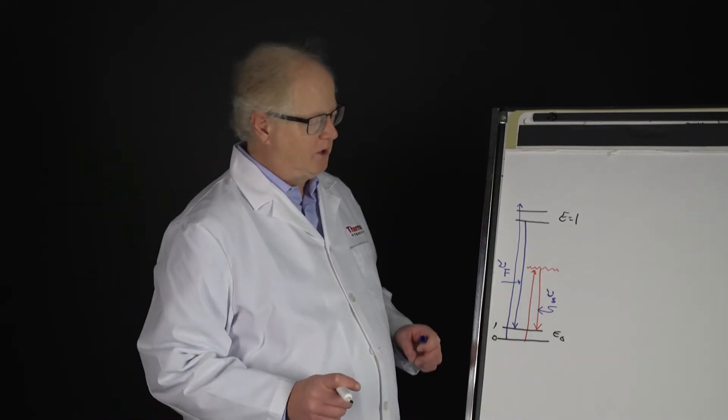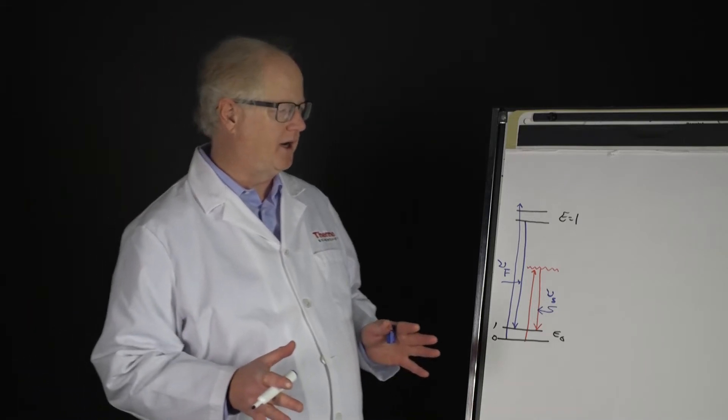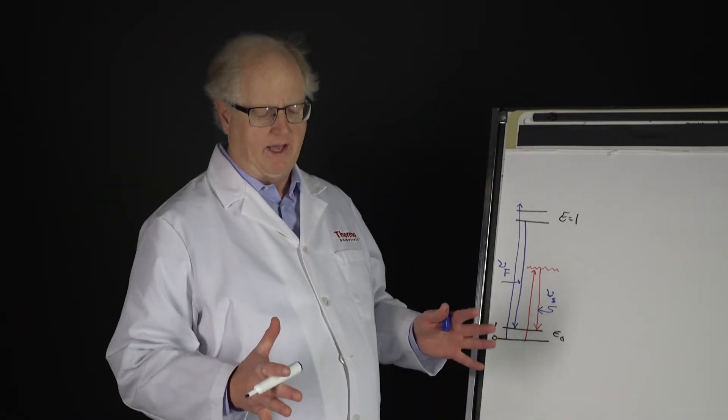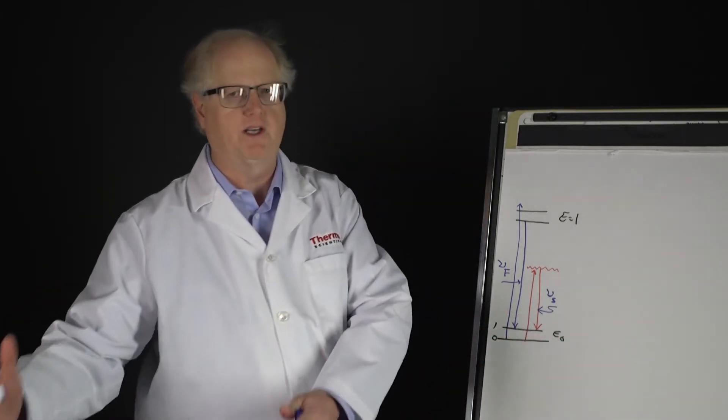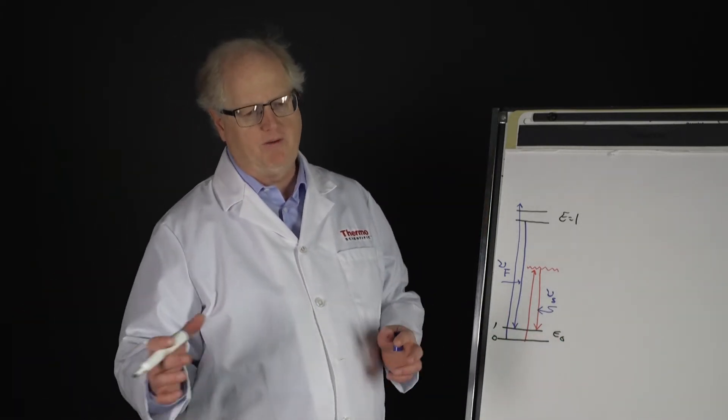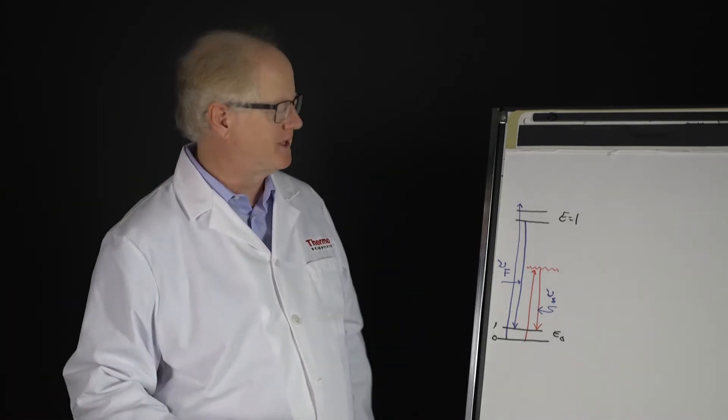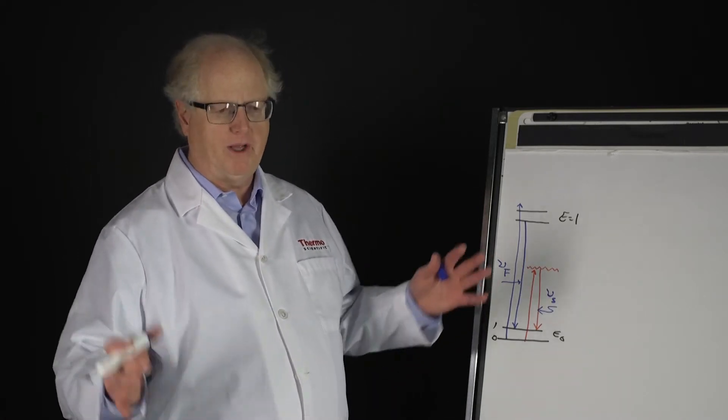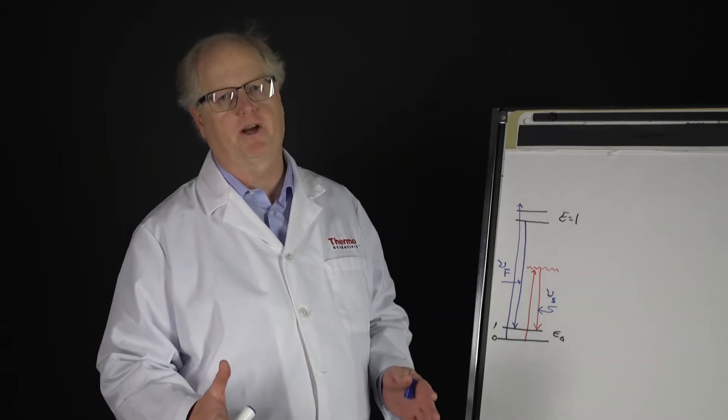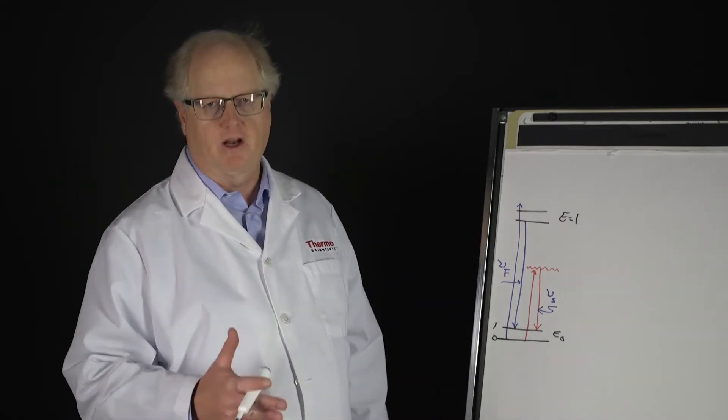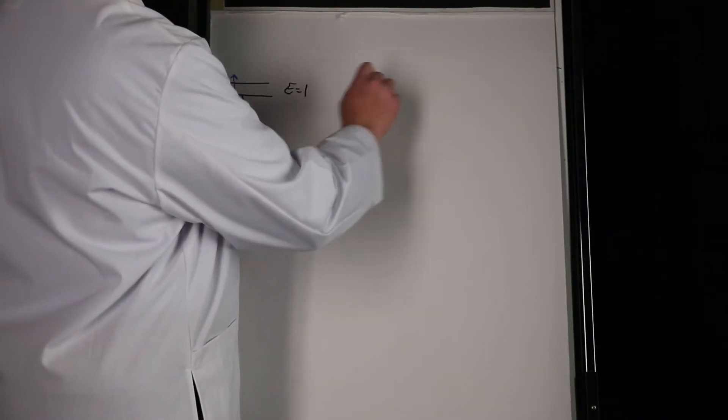On the Thermo Scientific Nicolet iS50 FTIR spectrometer, we have a Raman module that fits right into the sample compartment. It doesn't require sitting on the side - the older previous generation instruments had a large module that sat on the side, but this module just fits right in the sample compartment and it utilizes the interferometer and detector scheme of the Nicolet iS50 spectrometer.